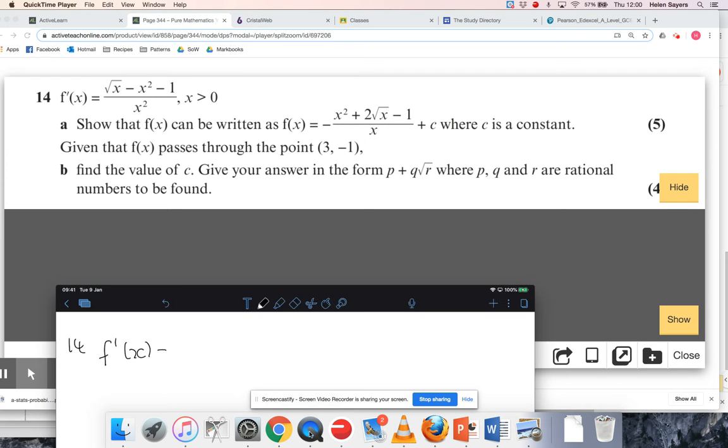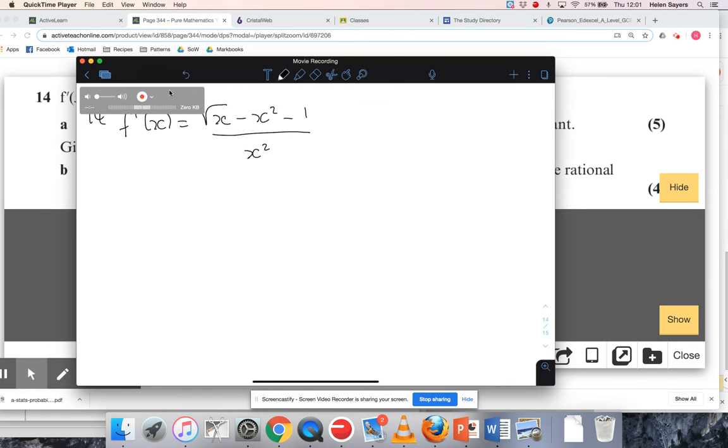So f'(x) is √x - x² - 1 over x². Right, so the reason this is quite a challenging question is because of the simplifying. So before I can attempt to integrate that, I need to cancel these terms down. You can't just integrate the numerator and denominator of a fraction separately. So you may find it helpful to just split it up into three separate fractions.